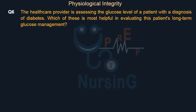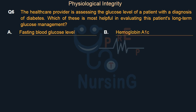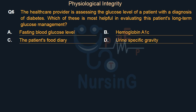The healthcare provider is assessing the glucose level of a patient with a diagnosis of diabetes. Which of these is most helpful in evaluating this patient's long-term glucose management? Option A: Fasting blood glucose level. Option B: Hemoglobin A1c. Option C: The patient's food diary. Option D: Urine specific gravity. The right answer is Option B: Hemoglobin A1c.